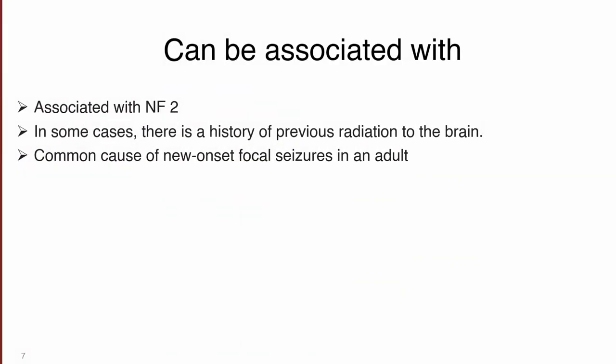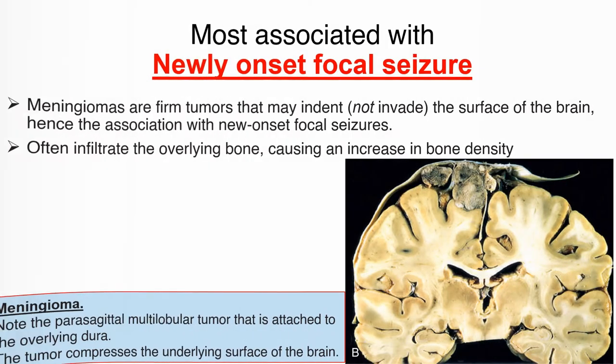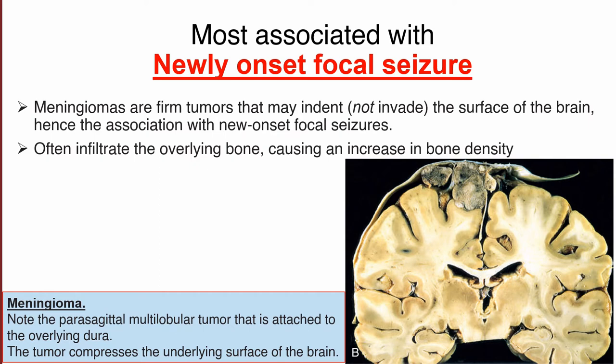There are some common associations of meningioma. These include neurofibromatosis type 2, and prior history of radiation to the brain also increases the risk. Meningiomas are the commonest cause of new onset focal seizures in an adult. This is because the firm tumor masses of meningioma do not invade through the brain parenchyma — they only indent the surface of the brain — hence they are associated with newly onset focal seizures.